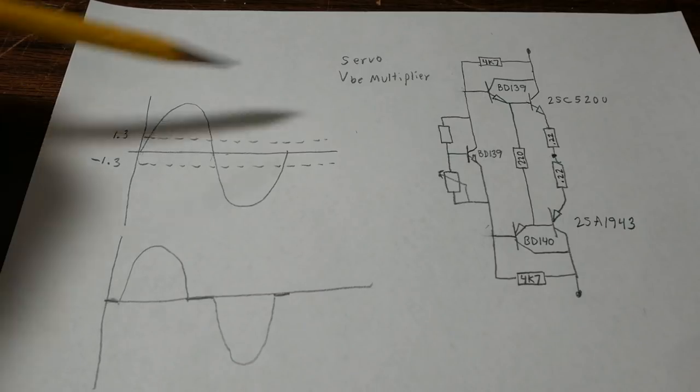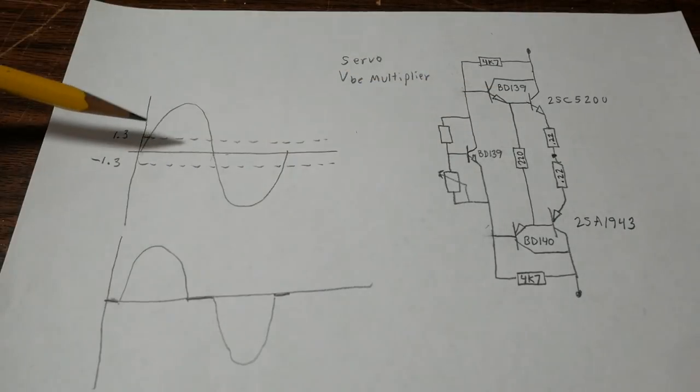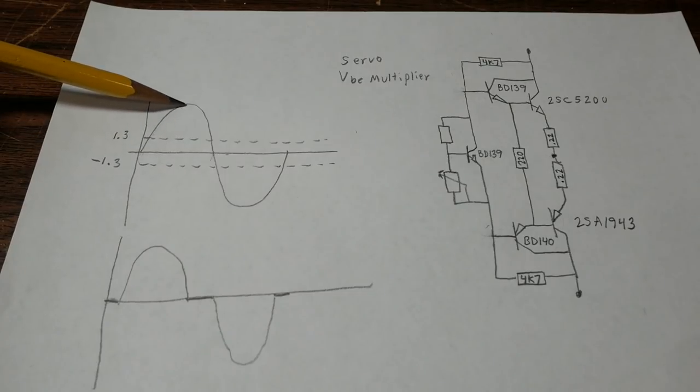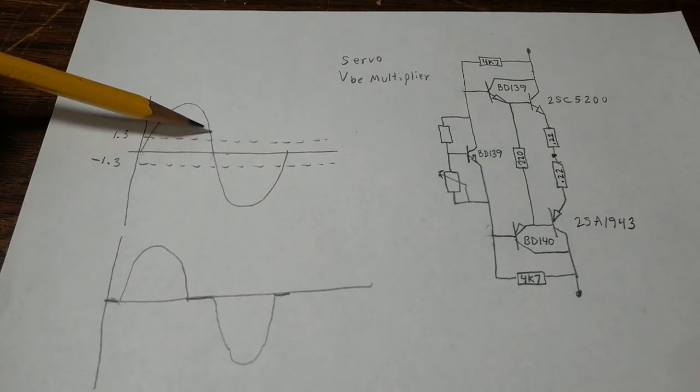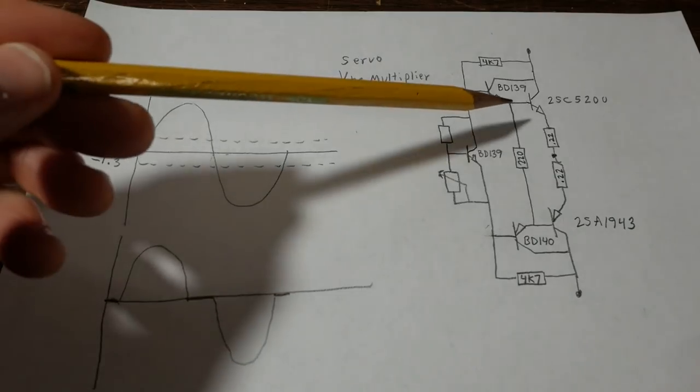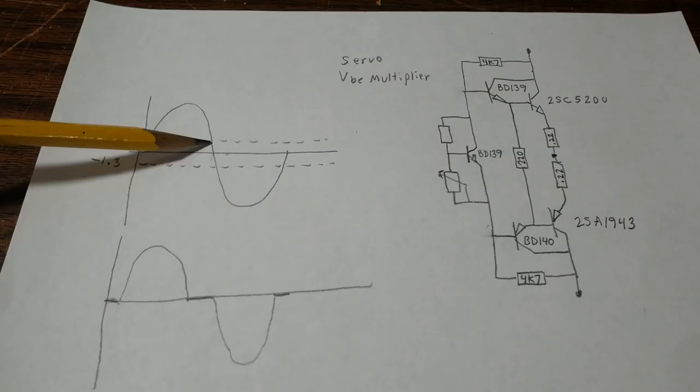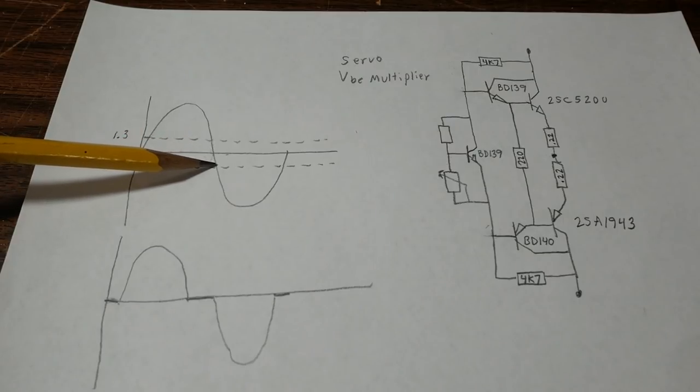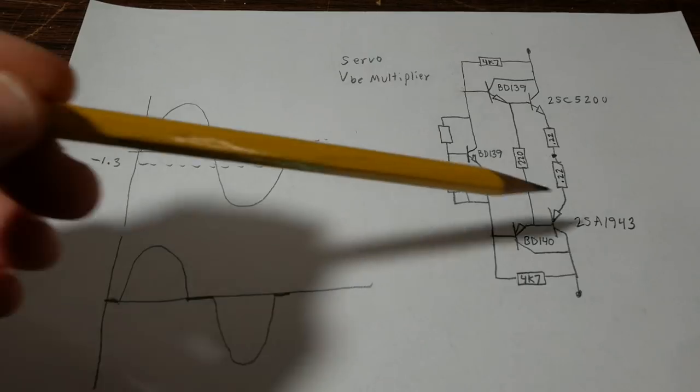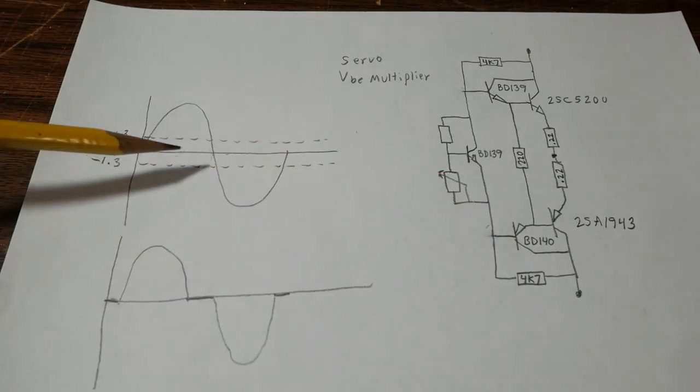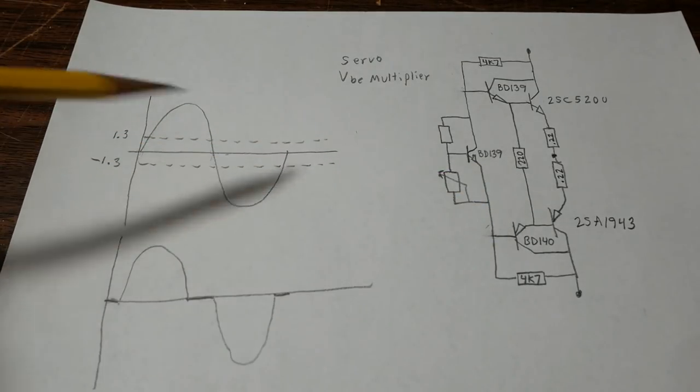Once we do the upper stage turns on and it will conduct and follow the waveform until it falls back to 1.3 volts. And again the voltage won't be enough and it turns off as it passes through zero to negative 1.3 volts. Once it hits that the bottom transistor turns on and it conducts for the negative half of the cycle.